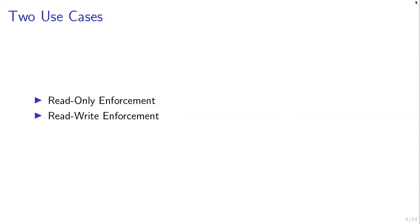In the read-write scenario, an employee is working on a file — say Brock is working on a file, makes some changes, edits it, saves the new version, and writes to it. Then the next day, Dahlia, who also has access to the file, wants to continue working on it, make some more changes, and again save a new version of the file. So in that case, we would use the read-write enforcement.